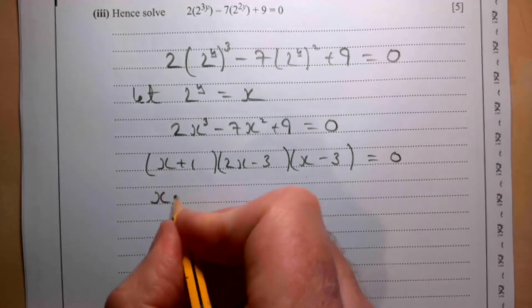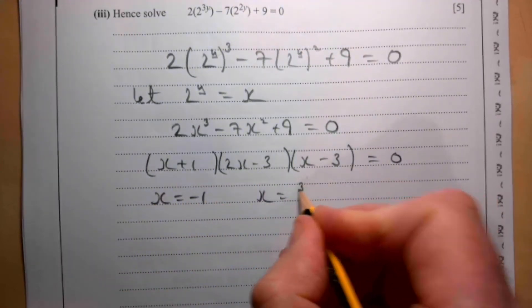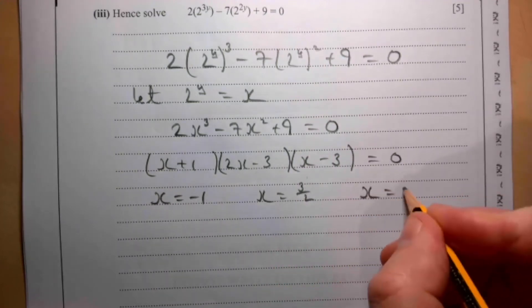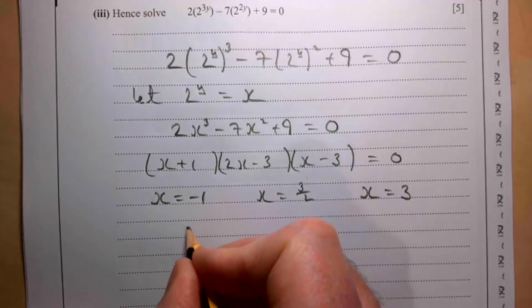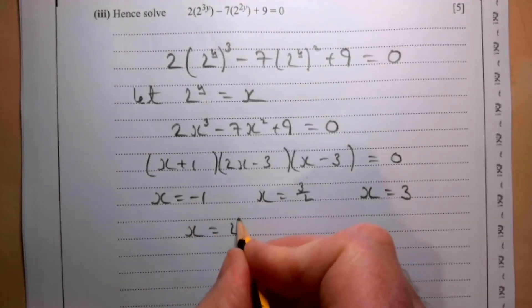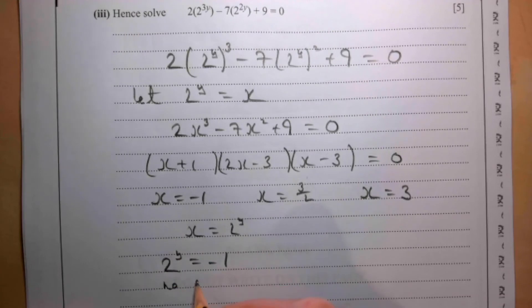So that gives me a value of x is -1, x is 3/2, and x is 3. But x is 2^y, so 2^y equals -1 is not possible, so there's no solution there.